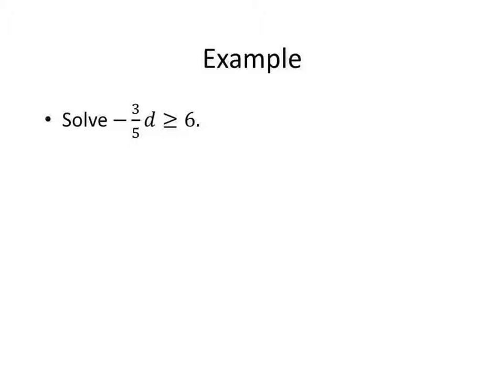If we have negative 3 fifths D is greater than or equal to 6 and we want to get D by itself, how do we get rid of the negative 3 fifths? We multiply by the reciprocal — we multiply by negative 5 thirds. Any number times its reciprocal is 1, so the 5s cancel, the 3s cancel, and negative times negative is positive, leaving you with just D.